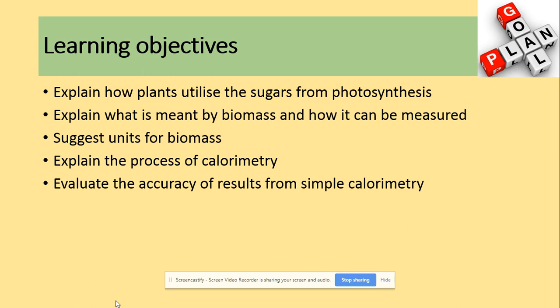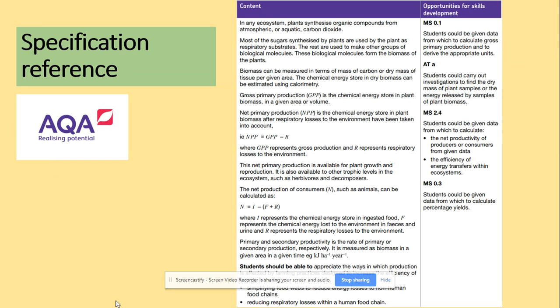Here we will be looking at biomass mainly and how this could be measured. In terms of the specification, we will be looking at biomass that can be measured in terms of the mass of carbon or dry mass of tissue per given area. The chemical energy stored in dry biomass can be estimated using calorimetry, and this is something that we are going to investigate today.